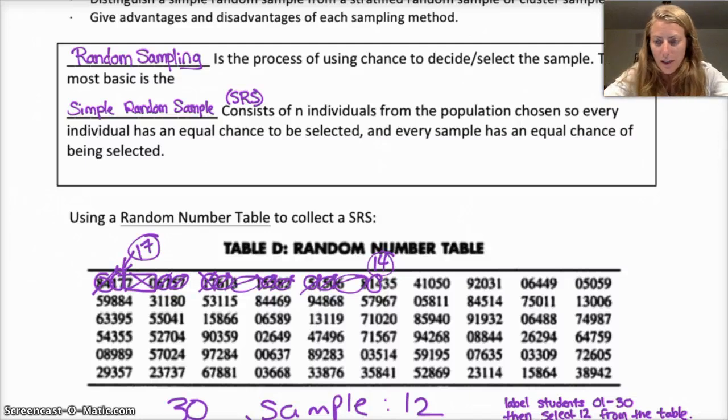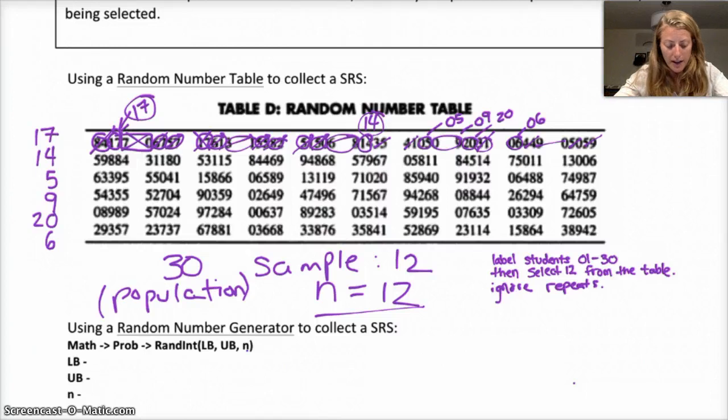Just from the first line, I already have like six people in my sample. I have 17, 14, 5, 9, 20, and 6. And then I would just keep going to the next row here. I would go to 59, and then 88, and 43, until I had all the people that I want in my sample. So if I want 12, I would need six more. But I'm not going to go through all that. But that's the idea with the random number table.